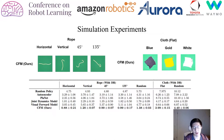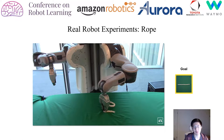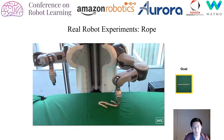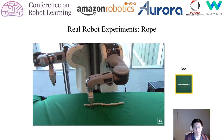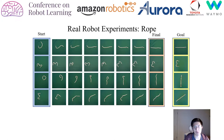Here we have an example of a real robot trajectory for rope manipulation. In real time, this takes about 10 to 15 minutes. Here we also show some extra rope trajectories with different goal states.